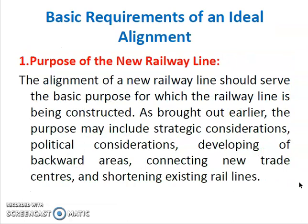Next, we will see about the basic requirements of an ideal alignment. The purpose of forming a new railway alignment is to serve the basic needs for which the railway line is being constructed. The purpose may include strategic consideration, political reasons, and to develop backward areas by connecting them to trade centers and to form loop lines.